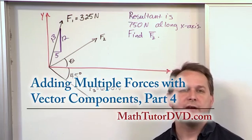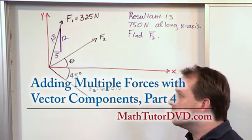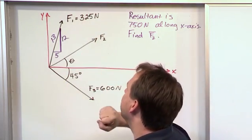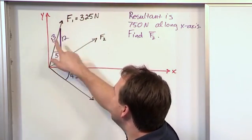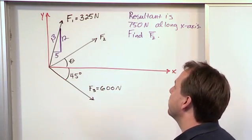We're still adding vectors using their Cartesian vector notation, but this one's a little bit different. What we have is three vectors on the board. F1 is 325 Newtons. It's going up at some angle that we're going to use this triangle to help us find, which we've been doing on several of these problems.